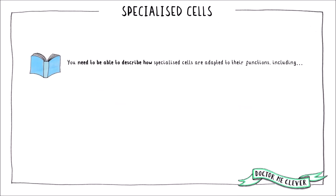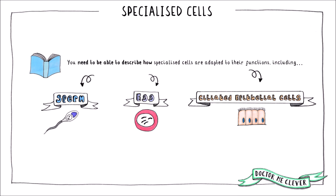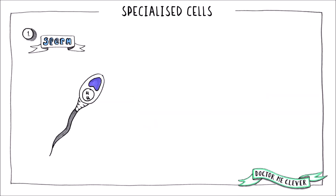There are three specialised cells mentioned in the edXL specification. You need to be able to draw and label these cells, and you also need to be able to state why each subcellular structure allows the cell to carry out its function. So what are these cells? There are a sperm cell, an egg cell and ciliated epithelial cells. So let's take a look at the sperm cell first.